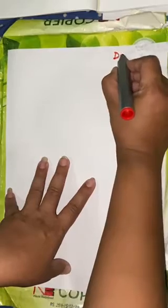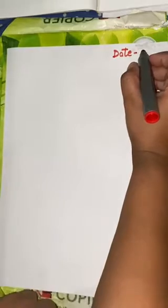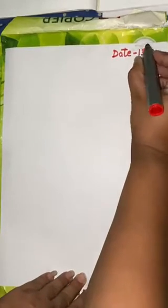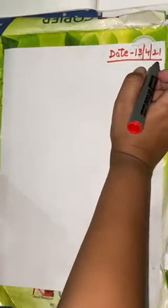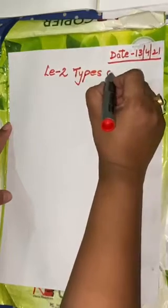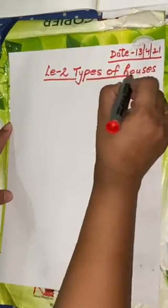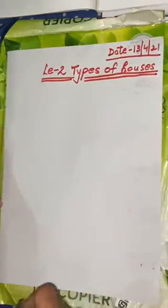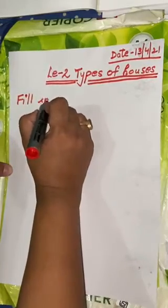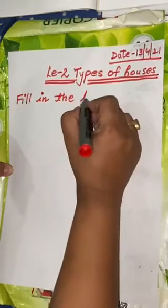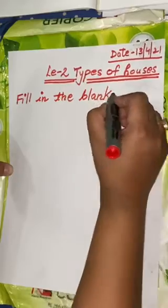So first write today's date: 13th April. Then write lesson number two, types of houses, and the heading: fill in the blanks.